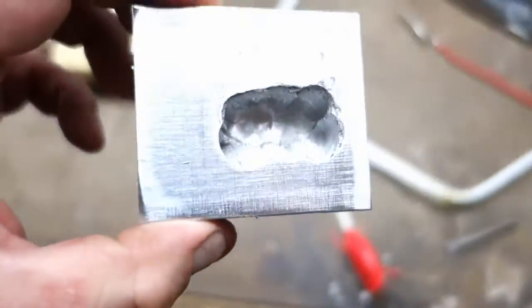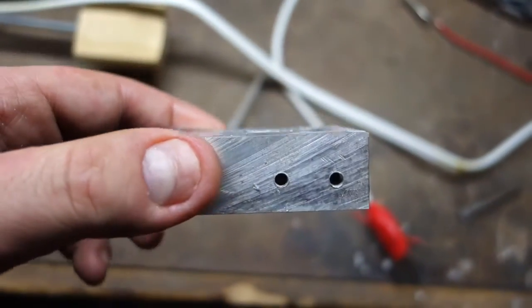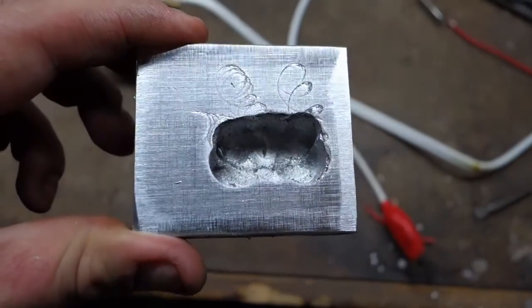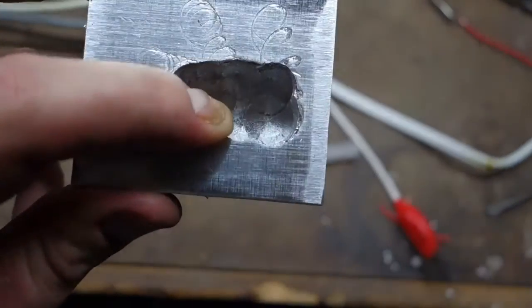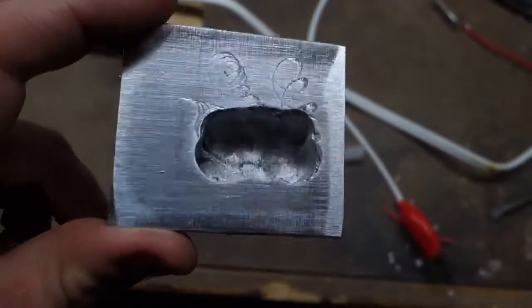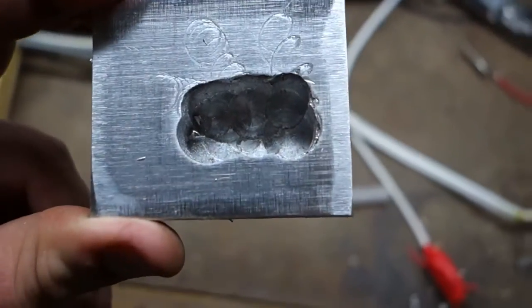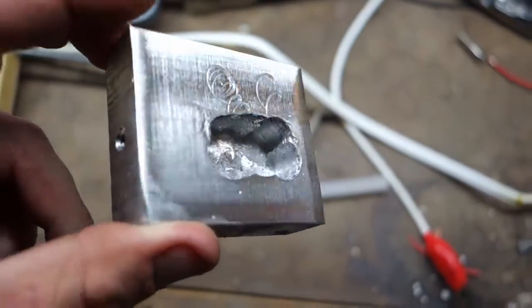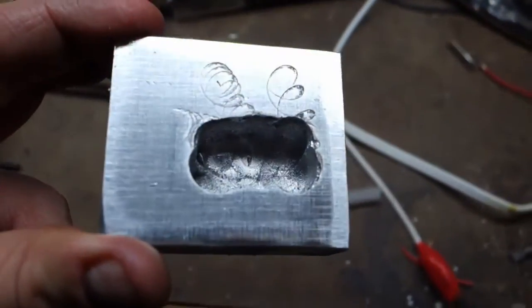I finally have the well milled out. It took me damn near forever. My drill press is acting up and it was having a hard time getting nice smooth cuts in there, but it should be deep enough and big enough to hold two grams easily, and that way I can do a whole hive.